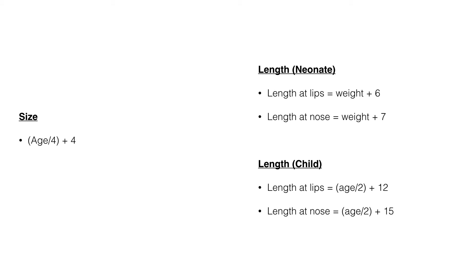For sizing, most people know the APLS formula: age over 4 plus 4. In neonates: under 1 kg use a 2.5 tube; 1–2.5 kg use a size 3; over 2.5 kg use a 3.5 tube; around 4–5 kg consider a size 4. For insertion length: at the lips it's age over 2 plus 12 for oral tubes, age over 2 plus 15 at the nose for nasal tubes. In neonates, weight plus 6 cm at the lips and weight plus 7 cm at the nose are accurate formulas.